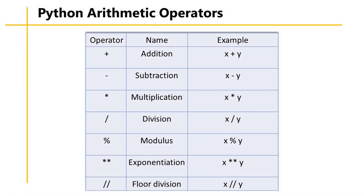These are the 7 Python arithmetic operators, namely: addition, subtraction, multiplication, division, modulus, exponential, and floor division.